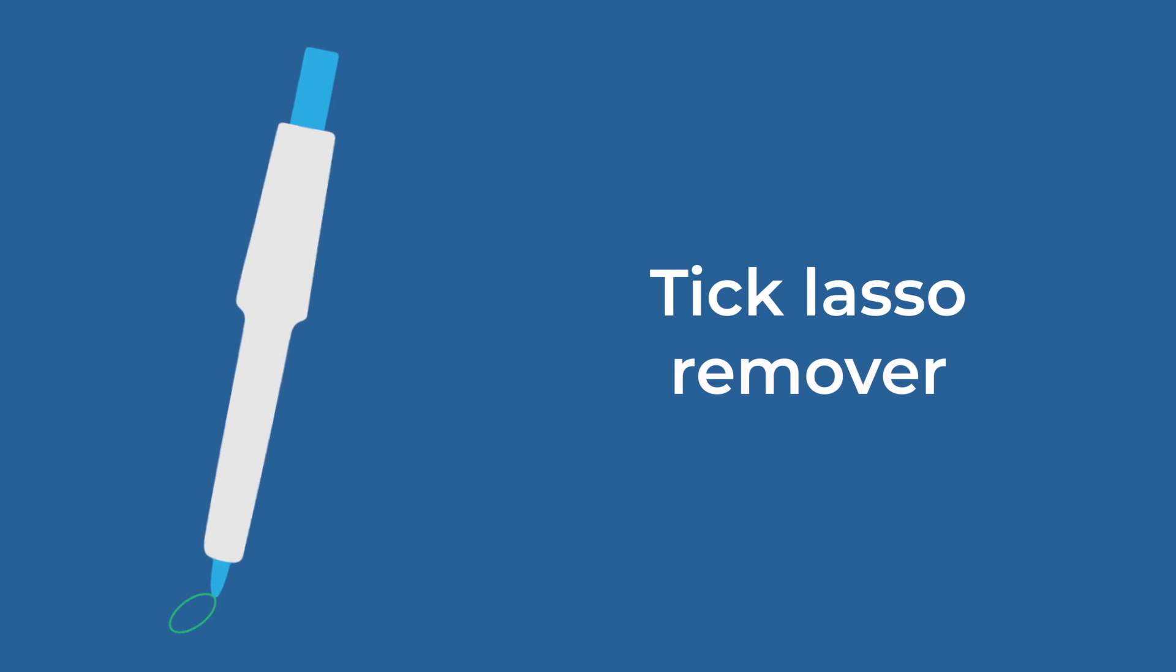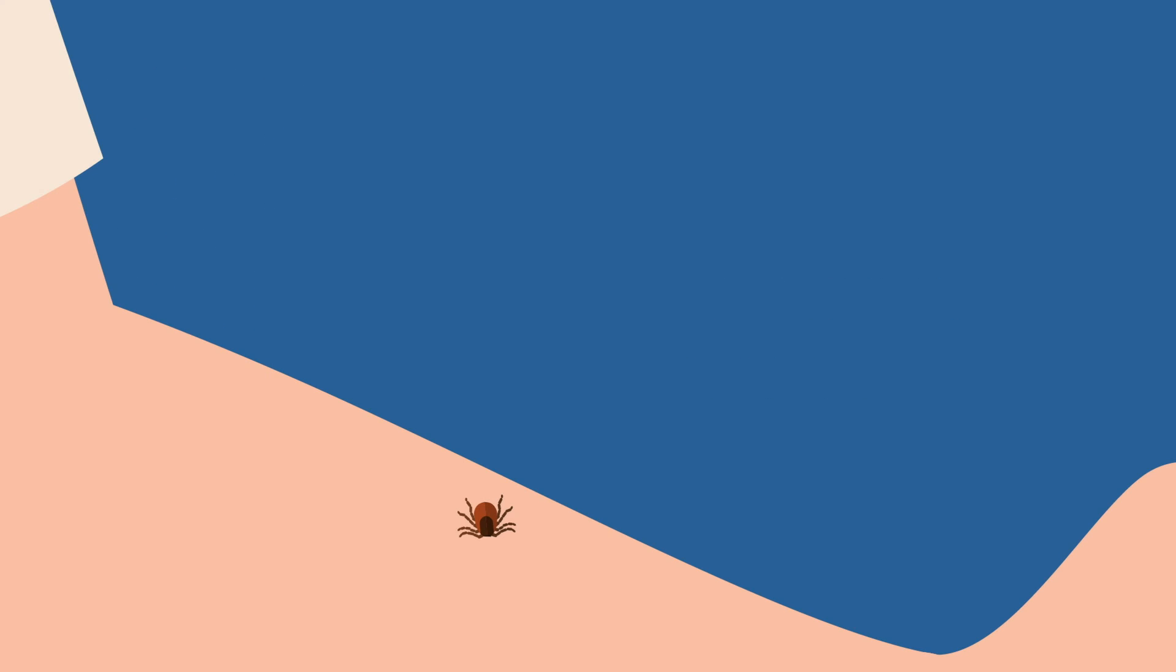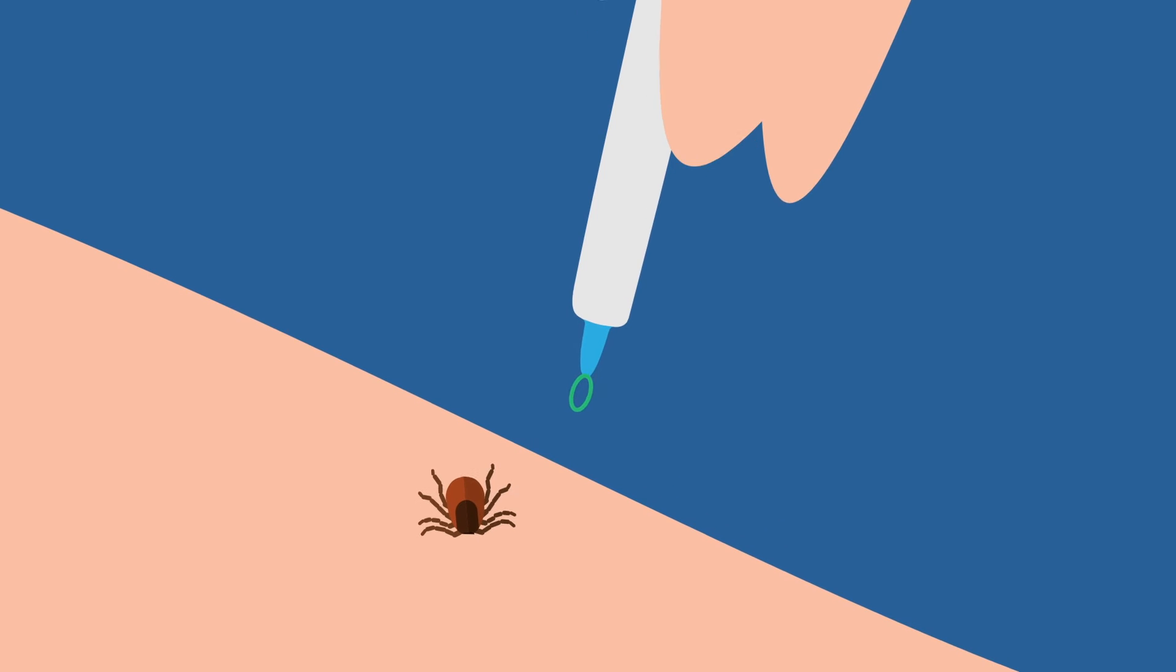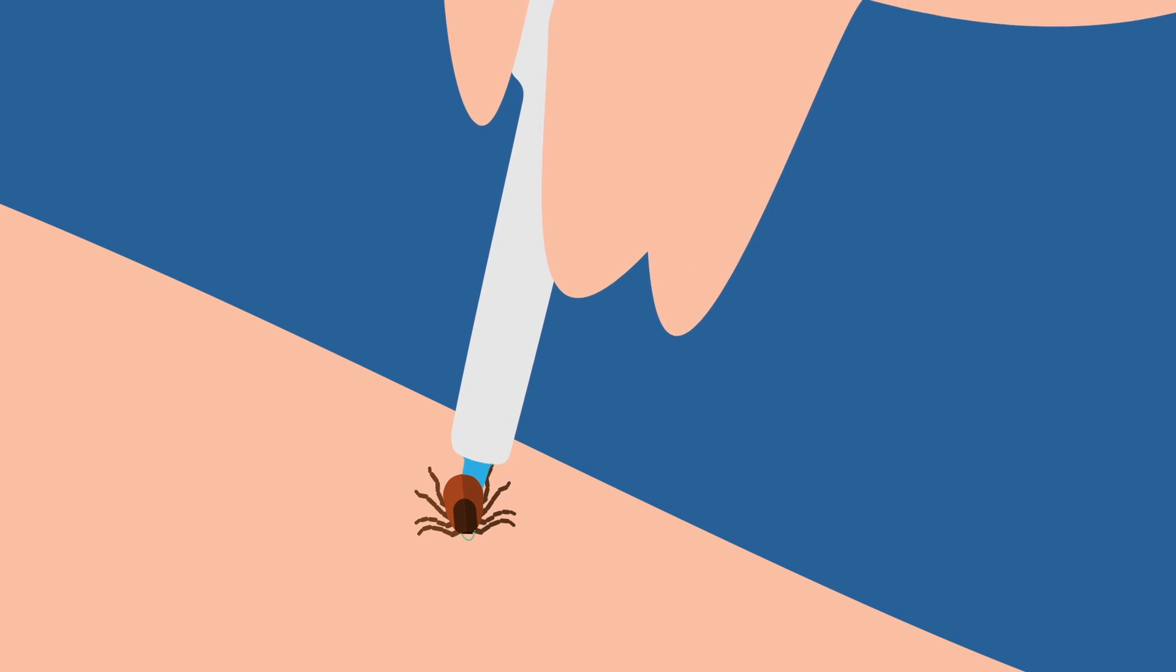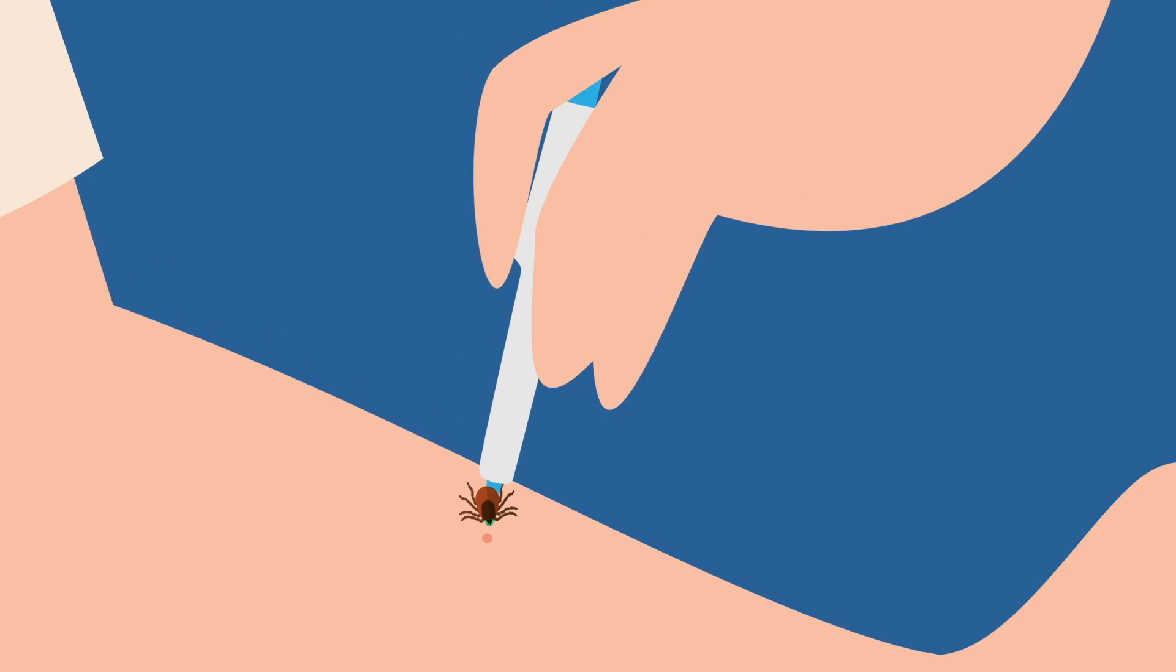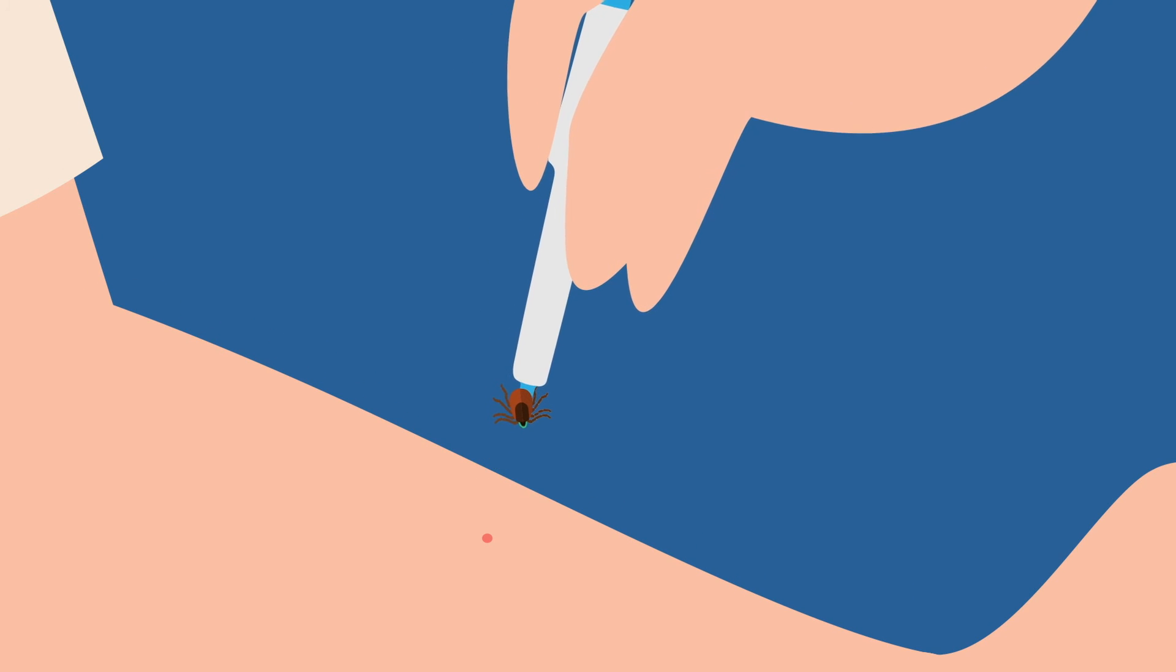Tick lasso remover. Slide out the loop and place it on the tick as close to the skin as possible. Release the button and, keeping the tip close to the skin, point the tool perpendicularly to the bite site. Make a rotational movement with your fingers using a loop in any direction while twisting the tick. Remember not to pull, but to twist the tick.